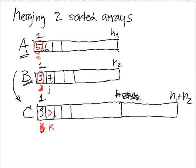And I move K and I move I. Now I compare six and seven. Six is smaller, so I copy six here. And I move K to this and I move I to the next element. And so on, until I copy everything.